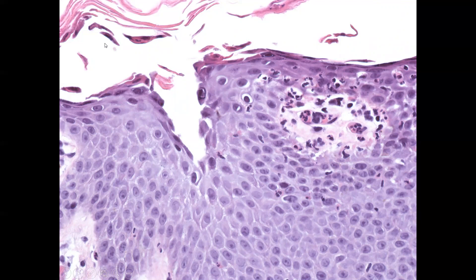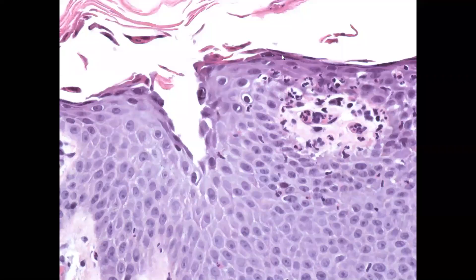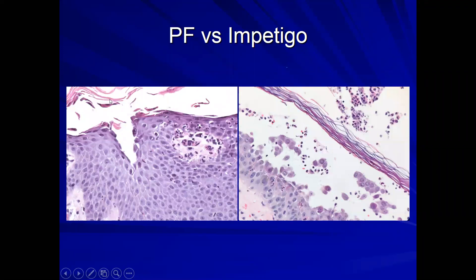This is pemphigus foliaceus, which otherwise looks very much like scalded skin. Pemphigus foliaceus also tends to retain the shape of the granular layer — the flattened squamous cells — whereas bullous impetigo tends to retain the roundness of the cells. The acantholysis is superficial and can be above the epidermis. If you see superficial acantholysis in your subcorneal split and cells retain a round shape, you would favor impetigo over pemphigus foliaceus.